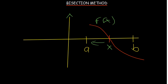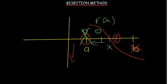To get closer and closer to the root, we start by finding the midpoint between a and b. If the midpoint and one of the endpoints are on the same side — meaning they give the same sign when substituted into the function — we discard that endpoint and keep the midpoint. We then find the next midpoint, repeating this process, getting closer and closer to the root. This is the bisection method.